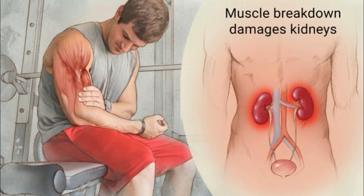Symptoms. People having rhabdomyolysis often experience pain, swelling, and weakness in their arms, legs, and all over the back. Other symptoms associated with this disease include dark colored urine, abnormal urine color, blood found in the urine, muscle tenderness, and bruising of muscles.